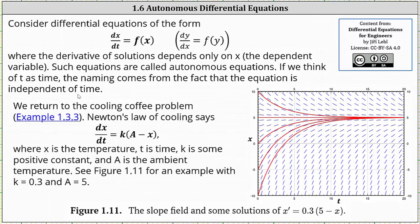Now let's turn to the cooling coffee problem using Newton's law of cooling, which states dx/dt equals k times the quantity a minus x. Here x is the temperature of the coffee, t is time, k is some positive constant, and a is the ambient or room temperature. The graph on the right shows an example of the slope field, as well as the graphs of several solutions when k equals 0.3 and a equals 5.